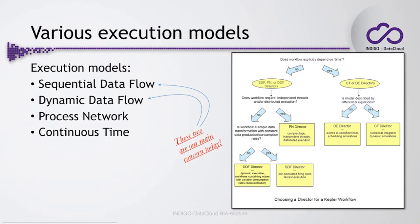Once you have a workflow, it can be executed in different ways. You can run it as a sequential data flow, where every component is executed one after another. You can run it as a dynamic execution model, where during execution you decide where data flows depending on conditions buried in the workflow. You can use a processing network, where each actor behaves completely independently and runs in parallel. And you can base computations on time, where time dictates actor execution. Today we will focus on sequential data flow and dynamic data flow, as they are the most basic and common.